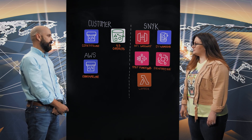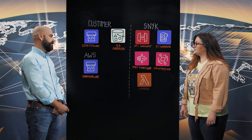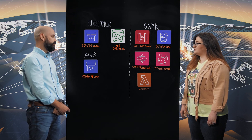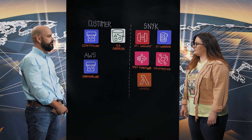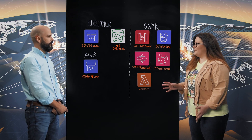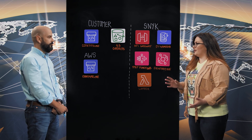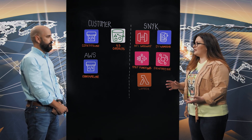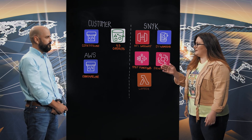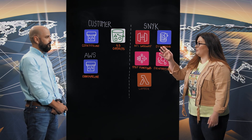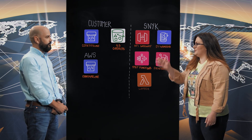Snyk is a developer-first application security company providing security controls within the tools that developers are using today to build their modern applications. CI/CD pipelines are at the heart of a development cycle. So how can I, as a developer, use Snyk as a part of CodePipeline on AWS?